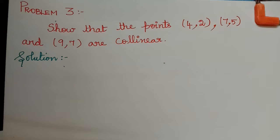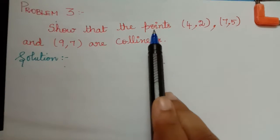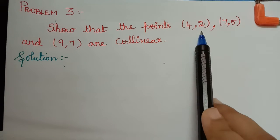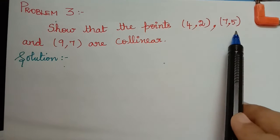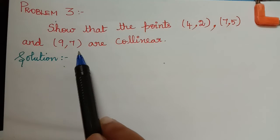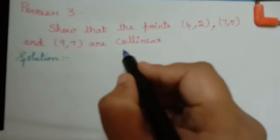Hello students. The next problem under the topic coordinate geometry is: show that the points (4,2), (7,5), and (9,7) are collinear.